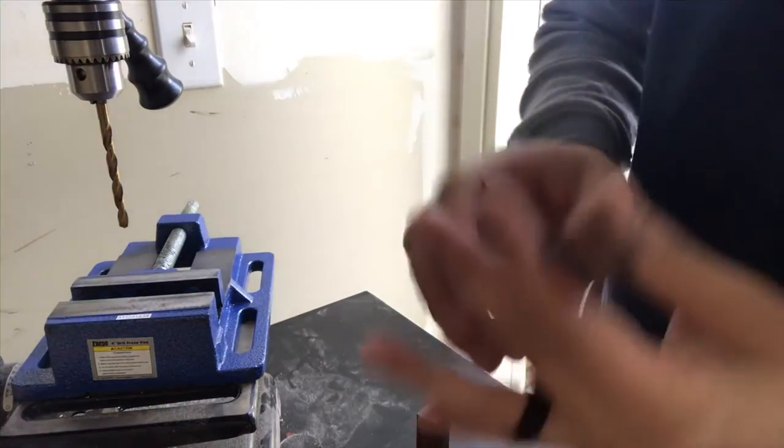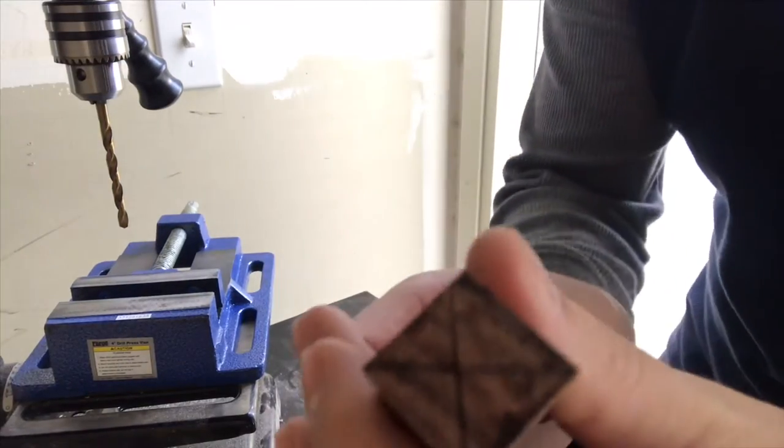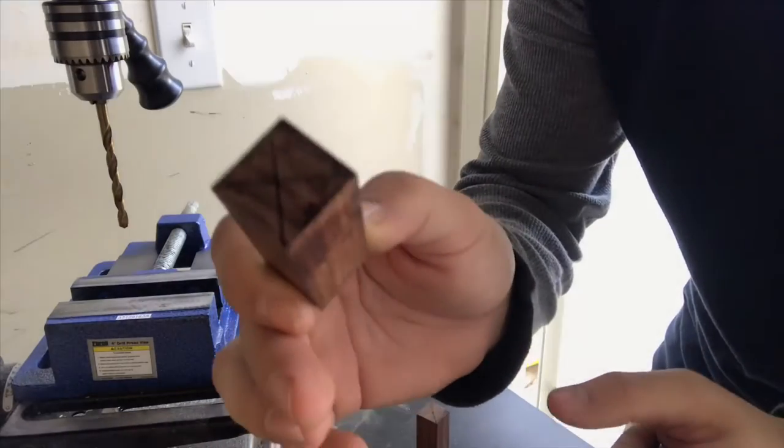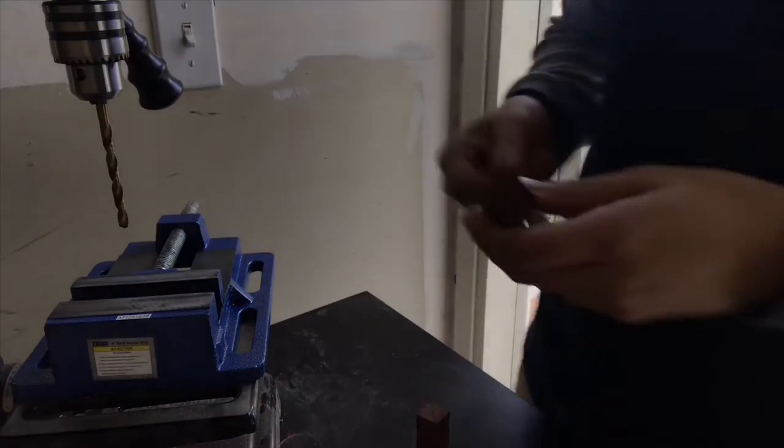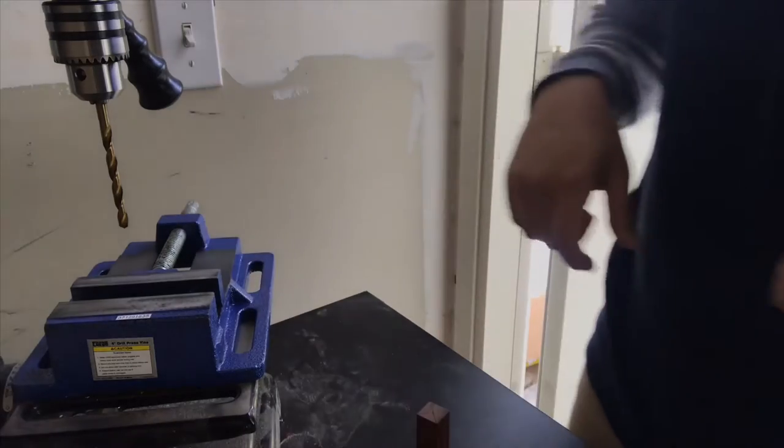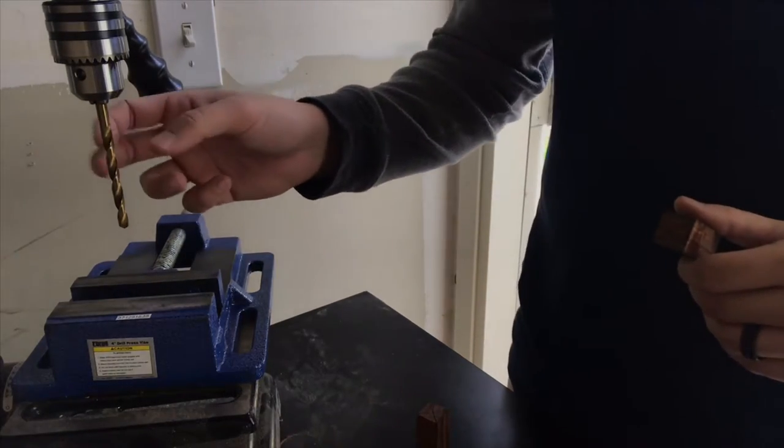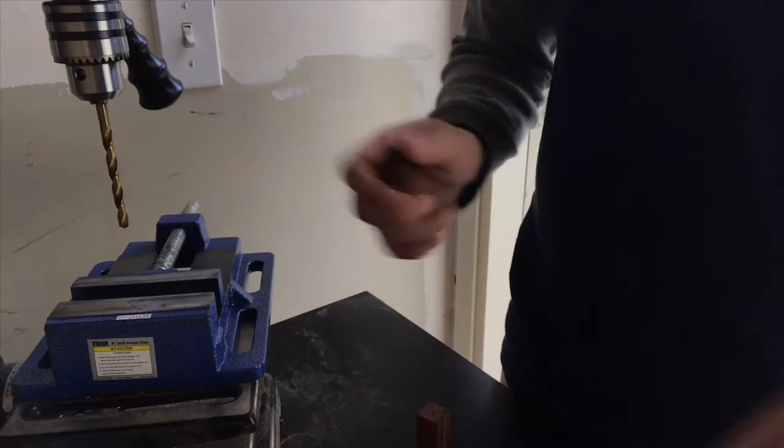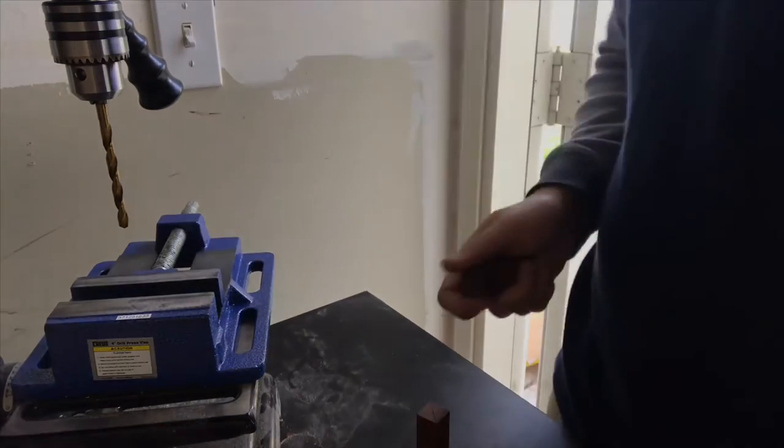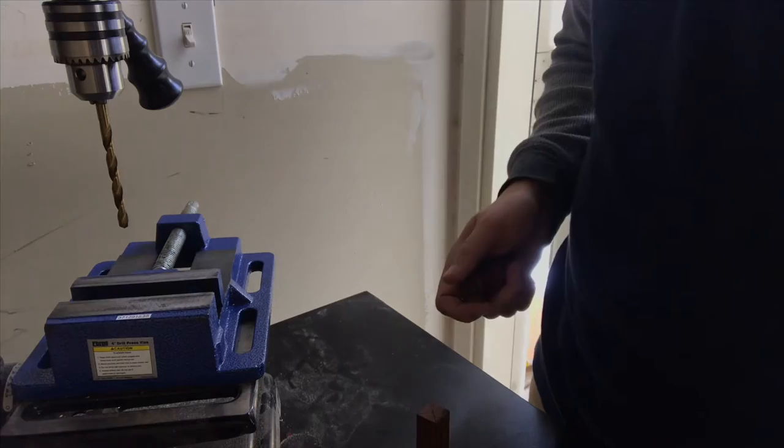Alright, so I just drew our scribe line. We did a little X, so that we know where to use our 1/4 millimeter drill to drill our hole, so that we can have room for our brass fittings. Alright.